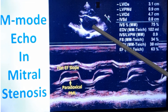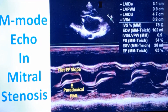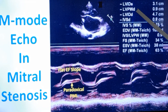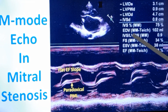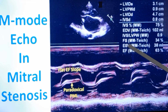The left atrial dilatation is secondary to mitral stenosis. The measurements of the left ventricle are also shown here: left ventricular internal diameter systolic, left ventricular posterior wall diastolic, left ventricular internal diameter diastolic, interventricular septum diastolic, end-diastolic volume, ratio between interventricular septum and posterior wall, fractional shortening, systolic volume, and ejection fraction.